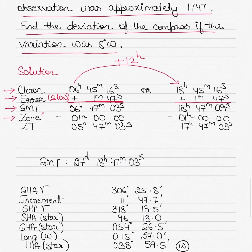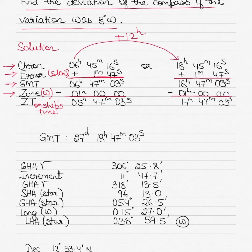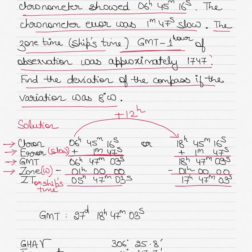The zone is 1 hour behind GMT. We are in west longitude — 15° 27' West — so when in west longitude, GMT is ahead of you. Subtract 1 hour from the GMT time to get your zone time, also called ship's time depending on which book you use. In one case the zone time is 05h 47m 03s, and in the other case it is 17h 47m 03s.